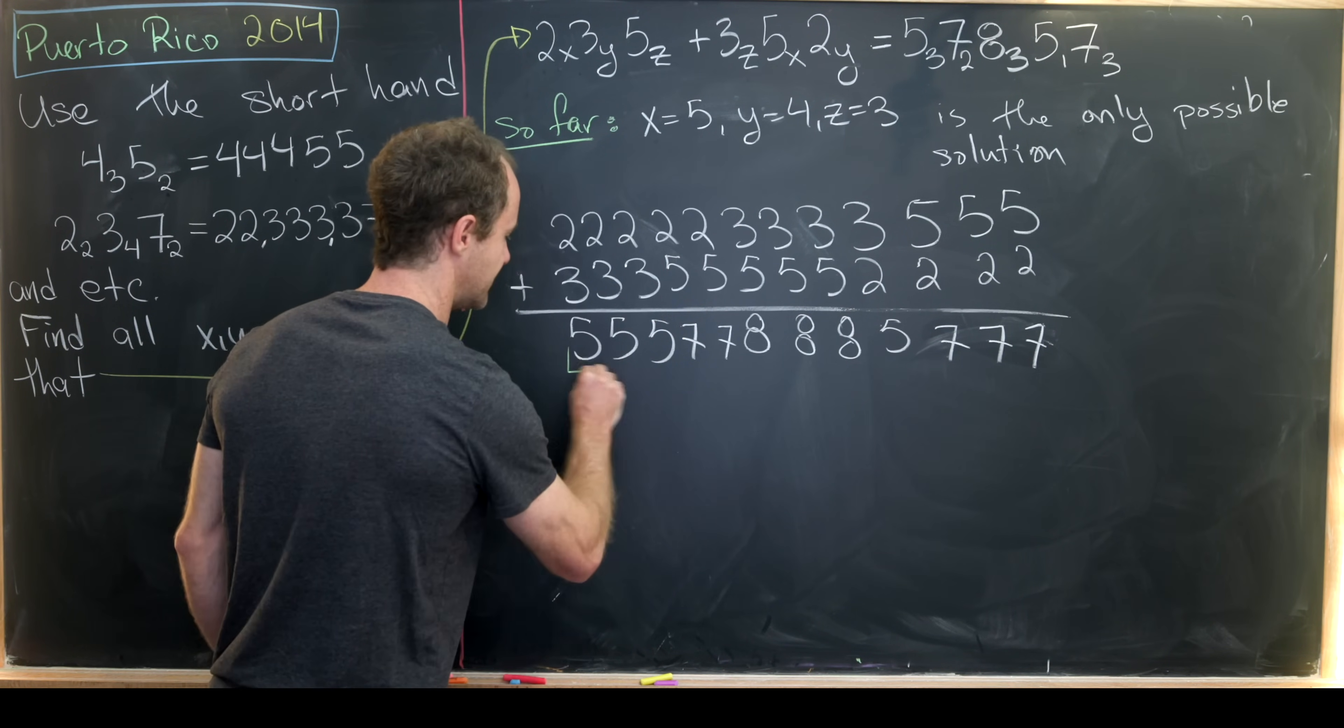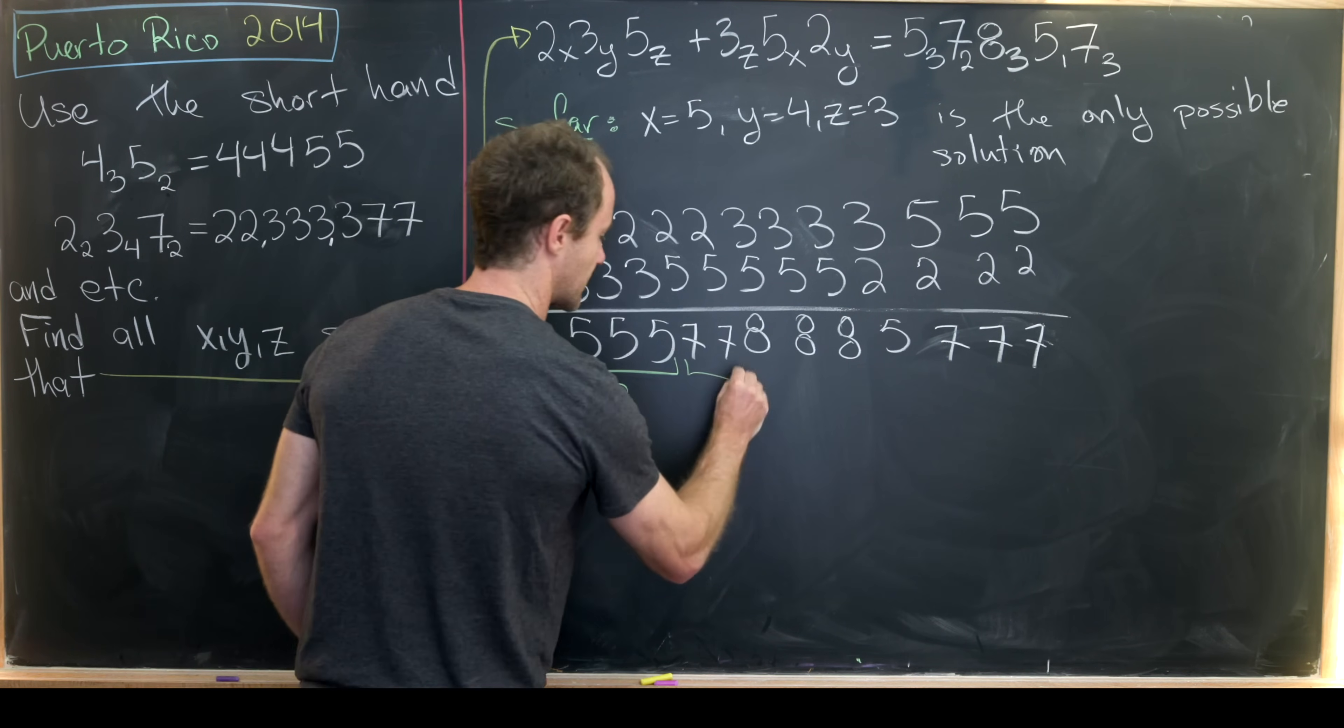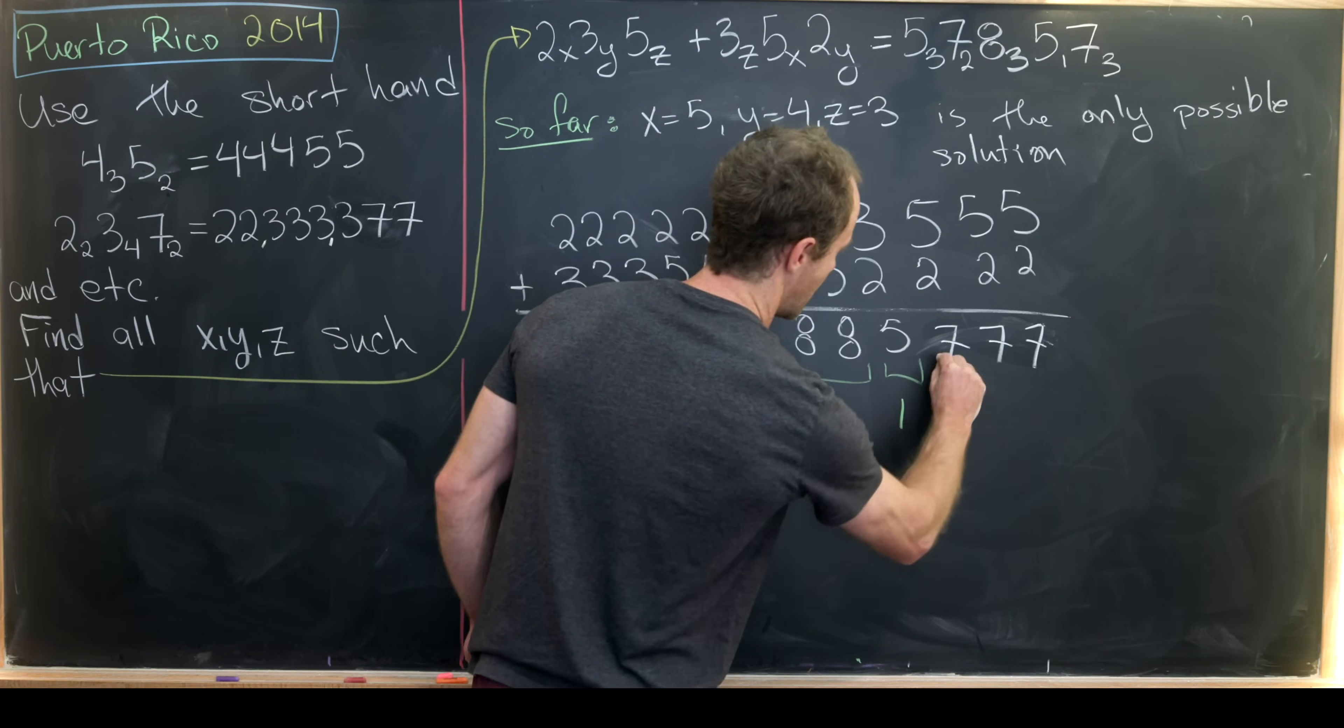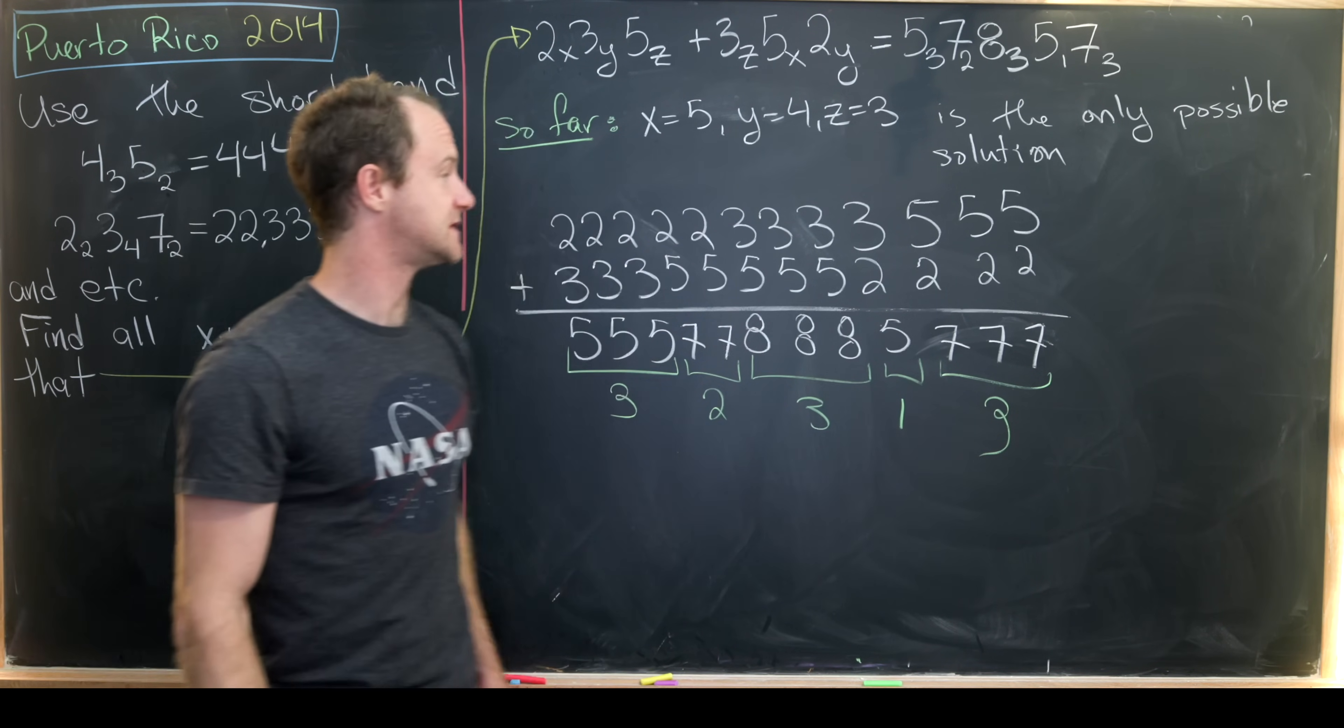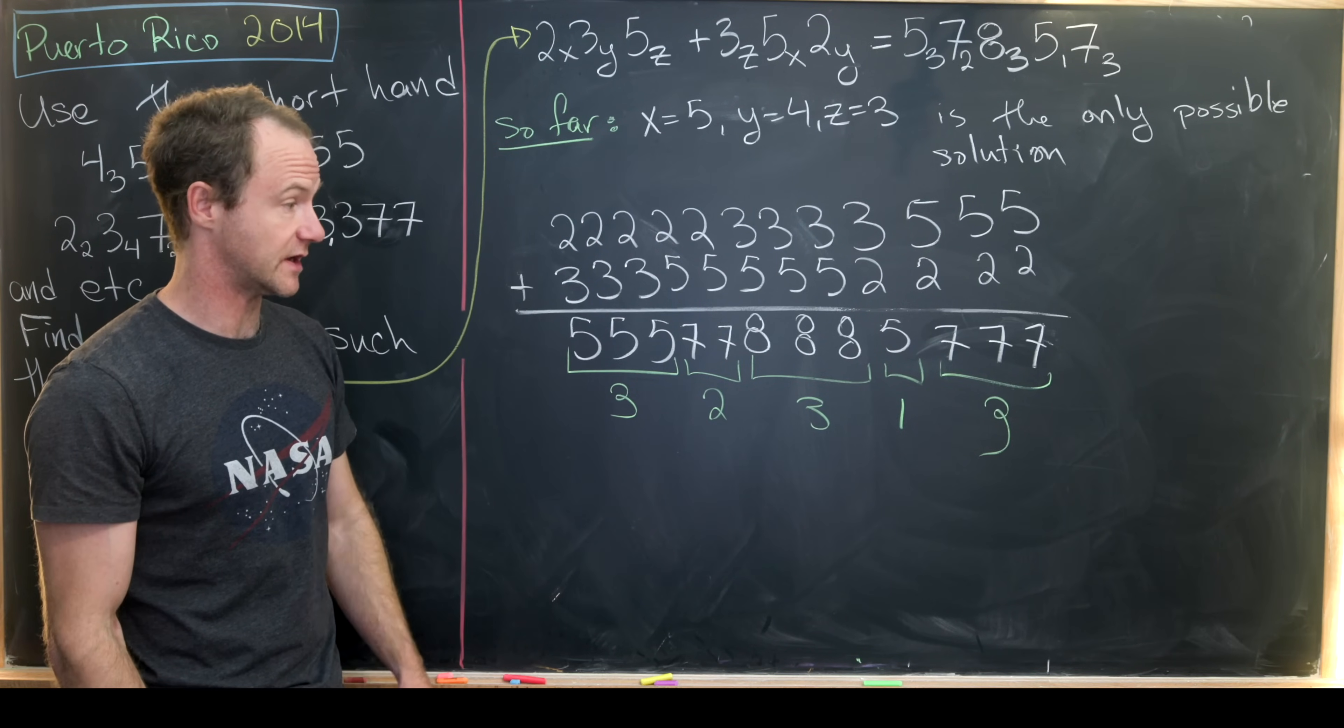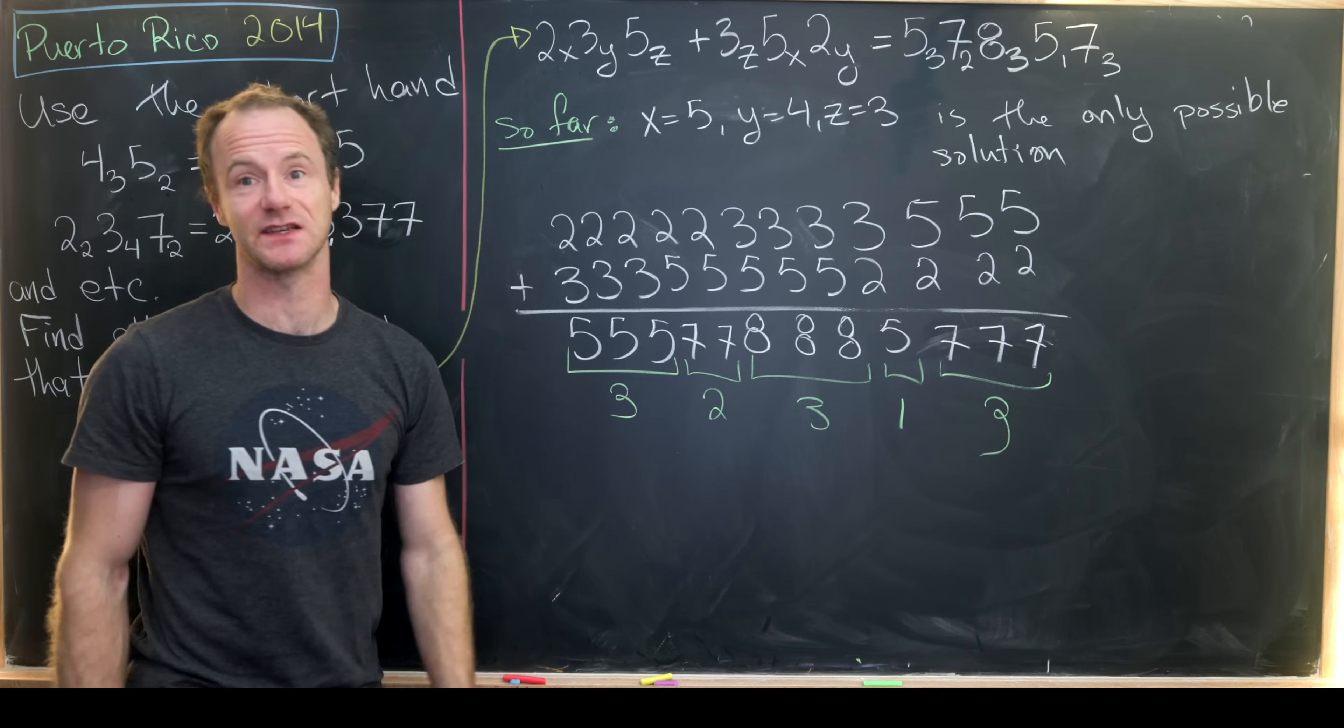Now let's check how many of these there are. There are 3 fives in a row right here, 2 sevens, 3 eights, here there's 1 five, and here there are 3 sevens. Does that match our subscripts here? Well it does. We've got 3, 2, 3, 1, 3. So that's good. That means our possible solution is a solution.